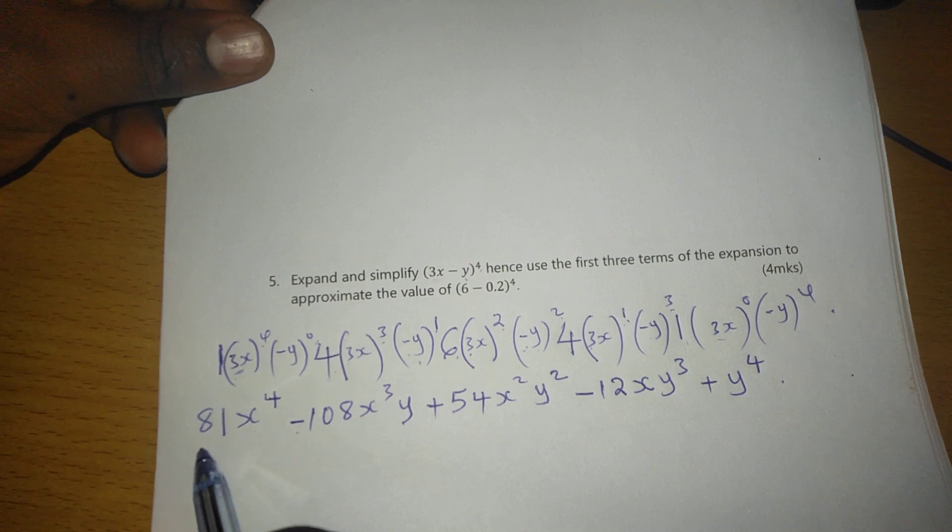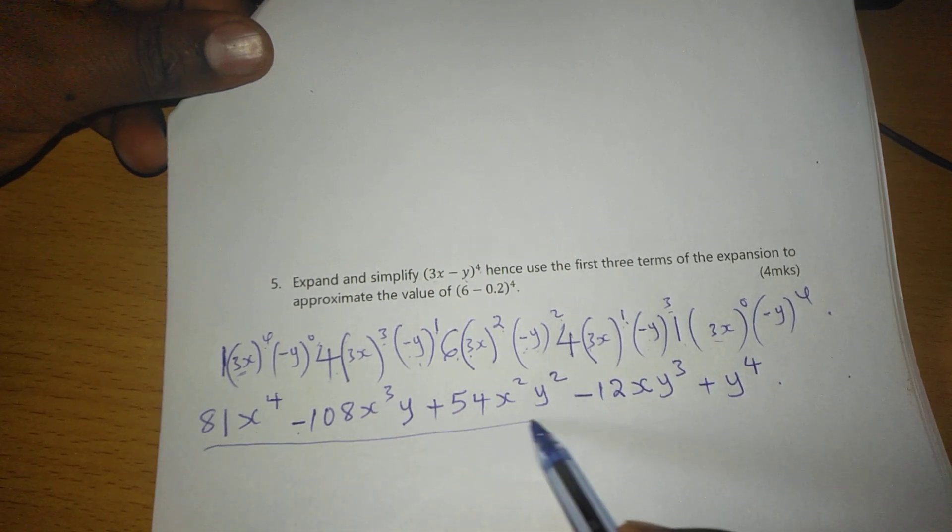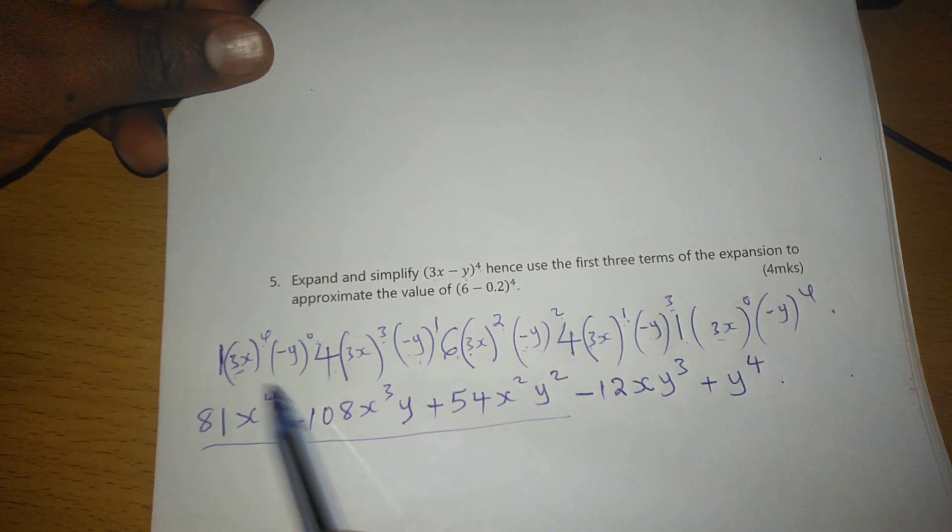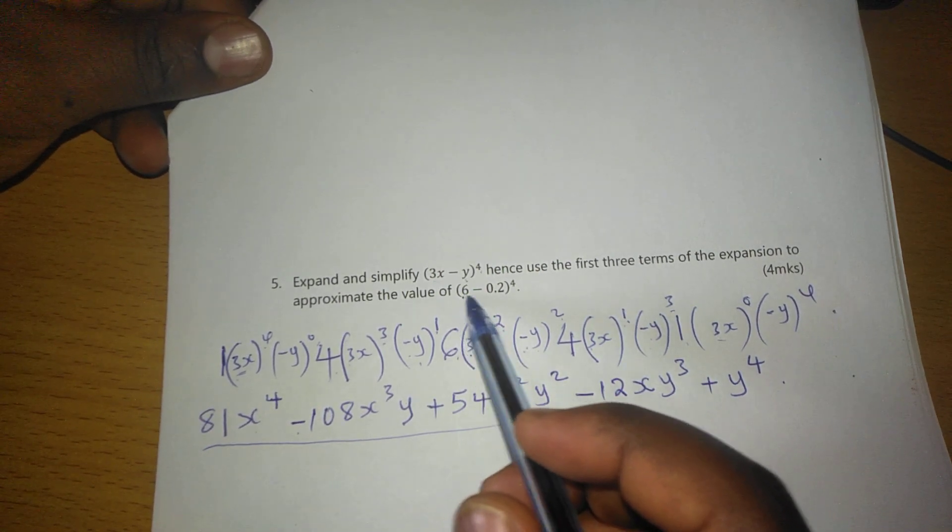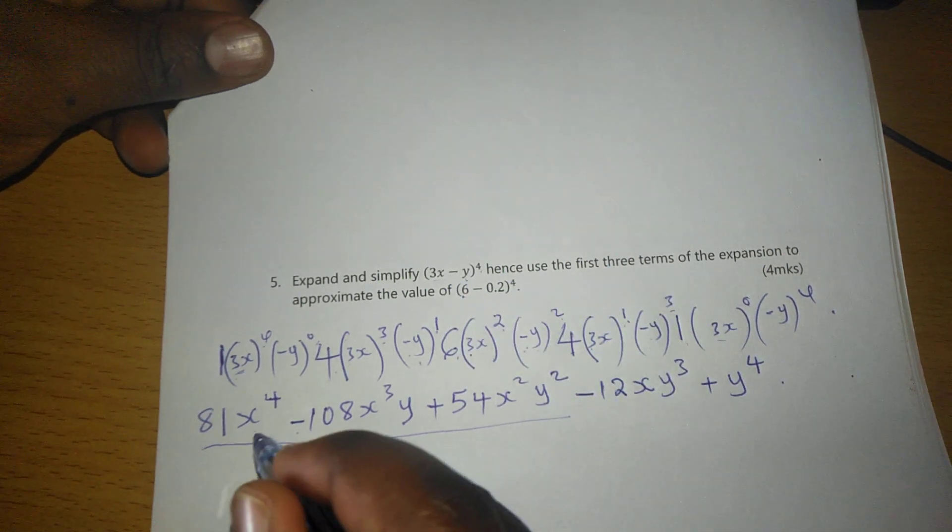Therefore, we will use the first three terms: the first term, the second term, and the third term. Those are the terms you use to approximate the value of this. So we are going to first of all